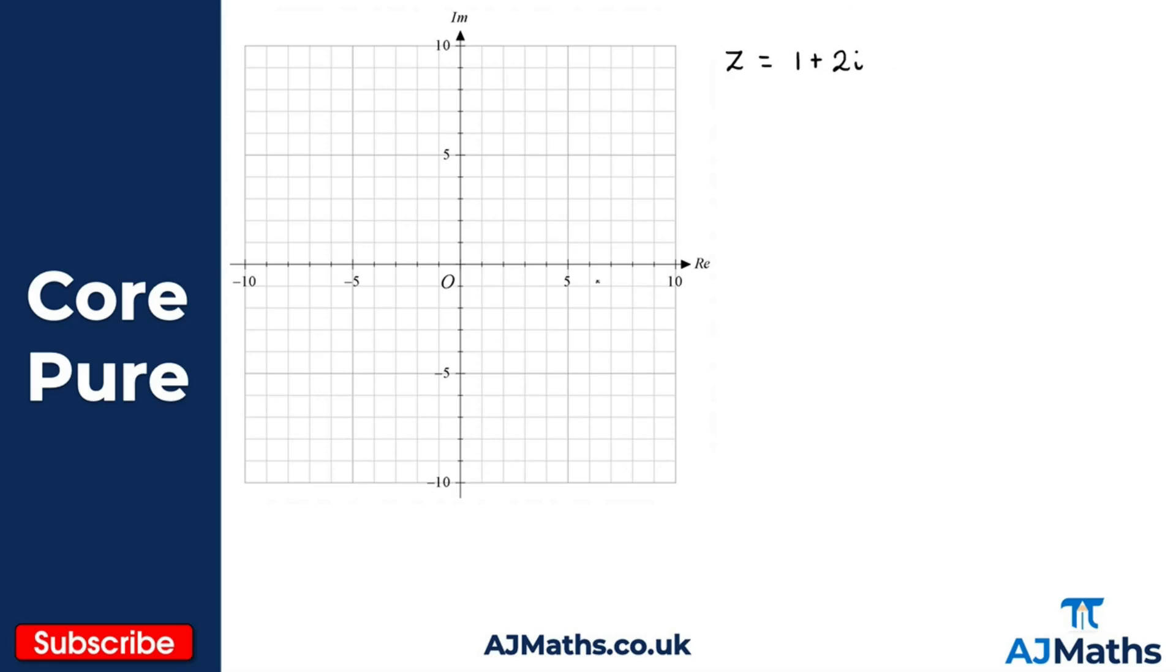When I plot this complex number, if we think about the real part that's one, so that means we go one unit along in the real sense. Then for the imaginary part, that's two units, it's 2i in the positive sense, so we go one unit along and then up two. We plot our point there. That would be z.